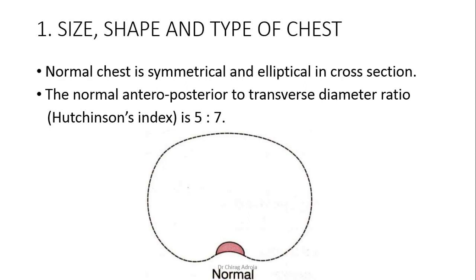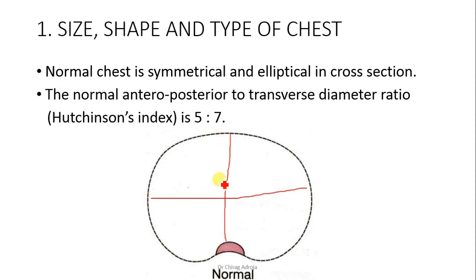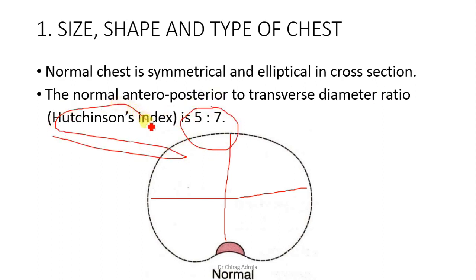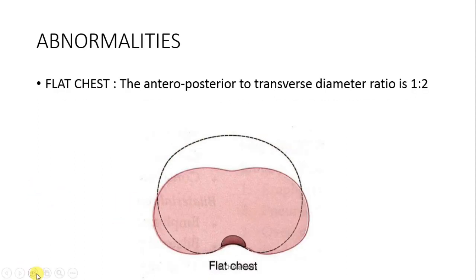Normal chest is symmetrical and elliptical in cross section. Chest is bilaterally almost symmetrical. The anteroposterior to transverse diameter ratio is 5:7 — this is also called Hutchinson's index. In normal chest, Hutchinson's index is 5:7 and the overall chest shape is elliptical in cross section.